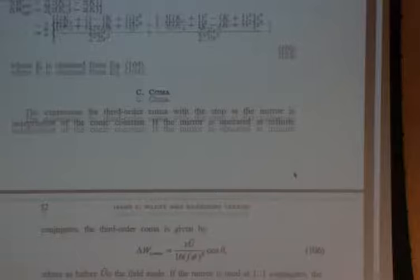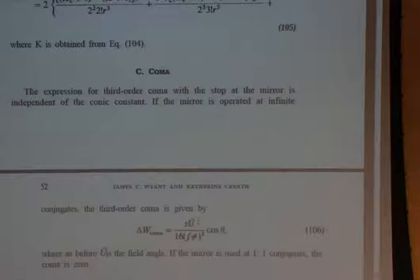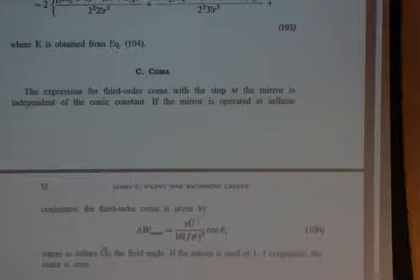If you aren't careful, you also will get coma if you go off axis. Remember, coma goes linear with field angle, so this is the expression for coma. And for astigmatism, this would be the expression — astigmatism always goes as the field angle squared.